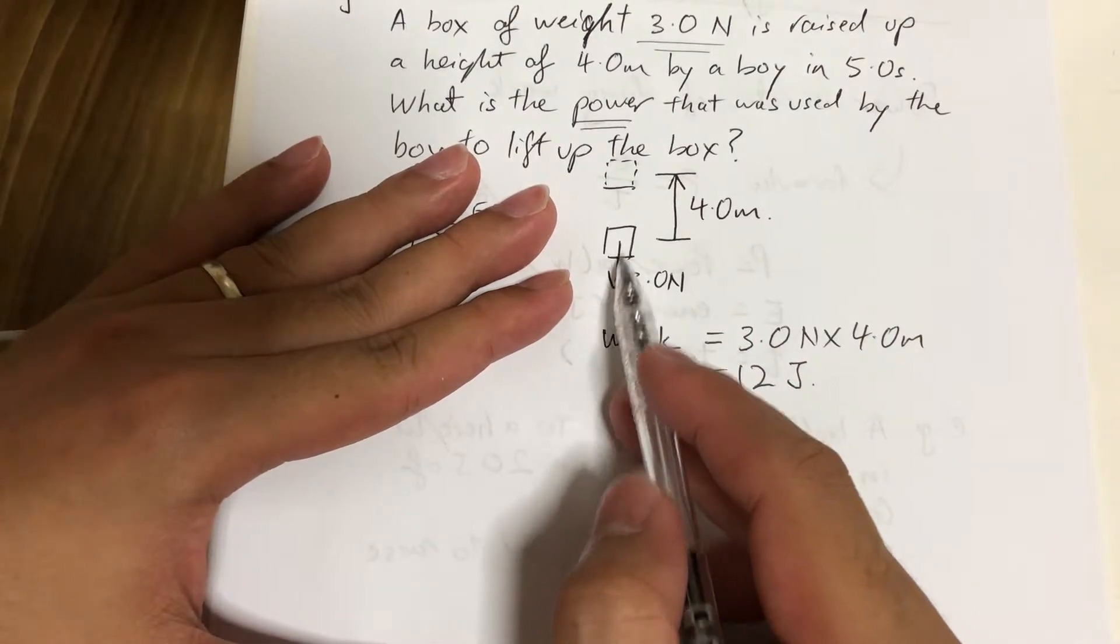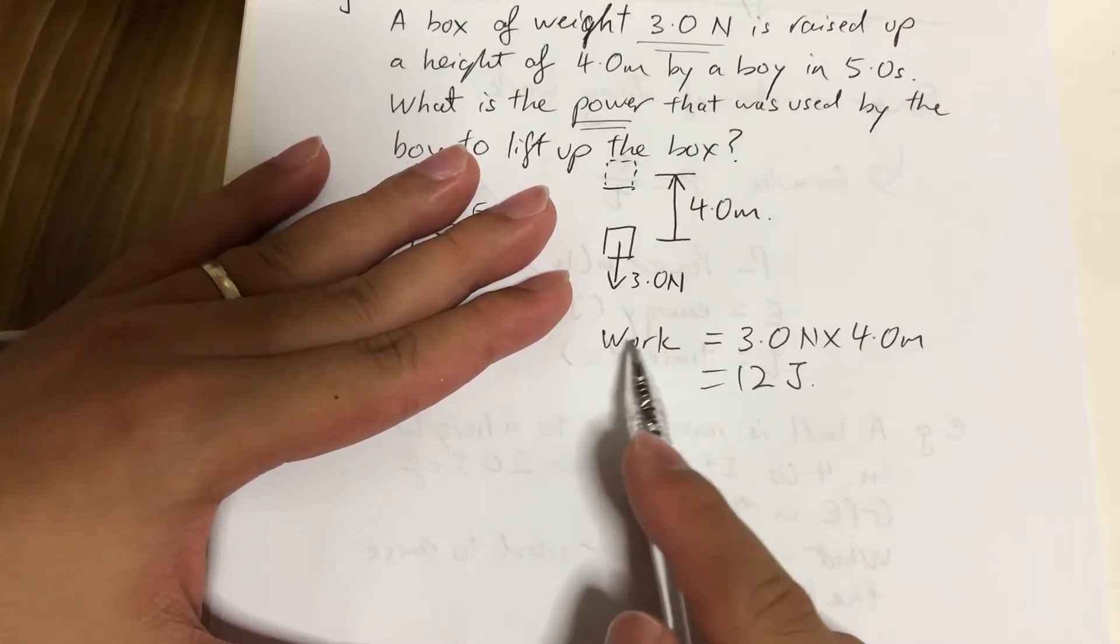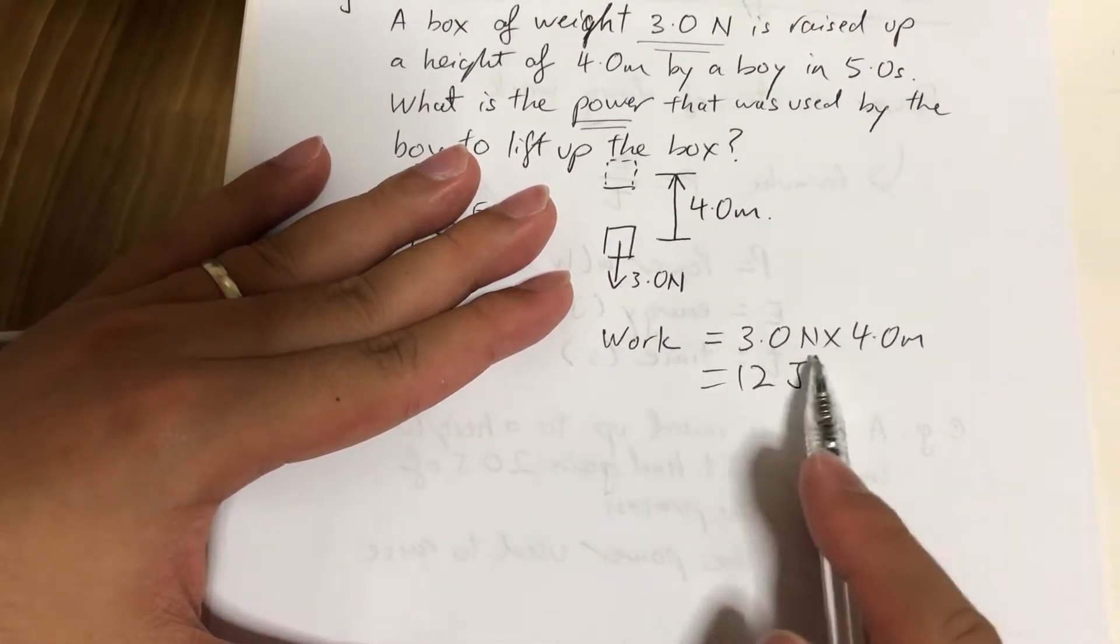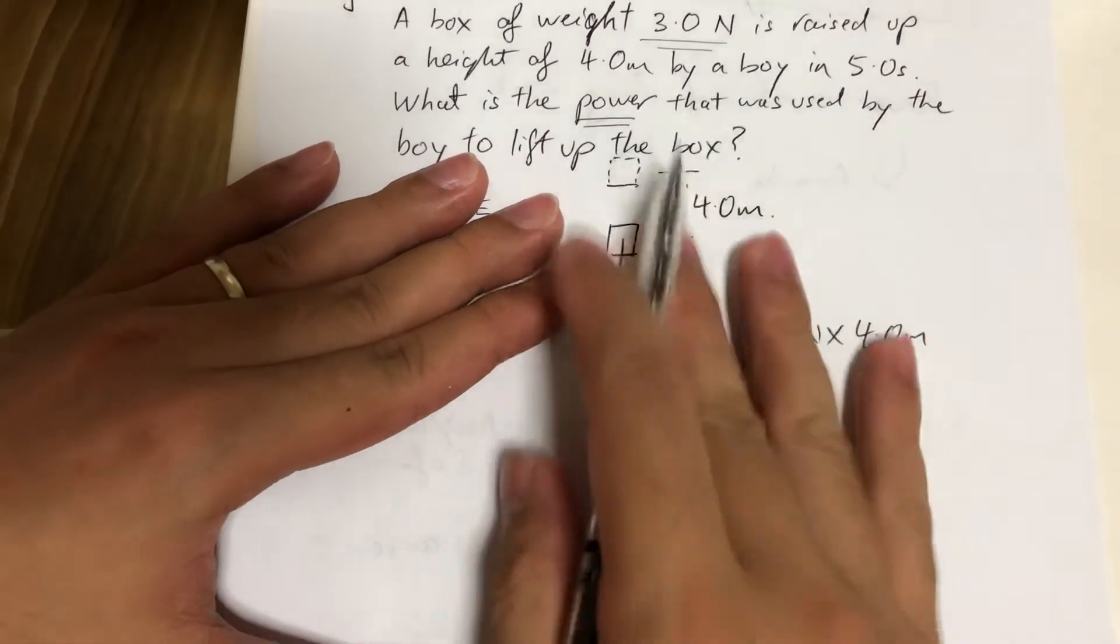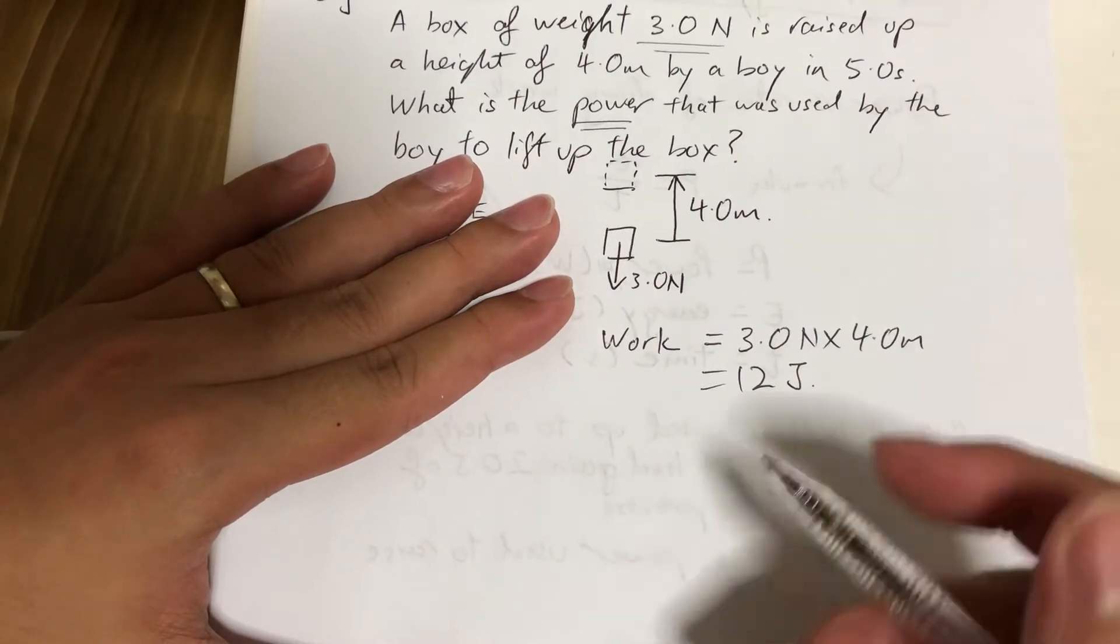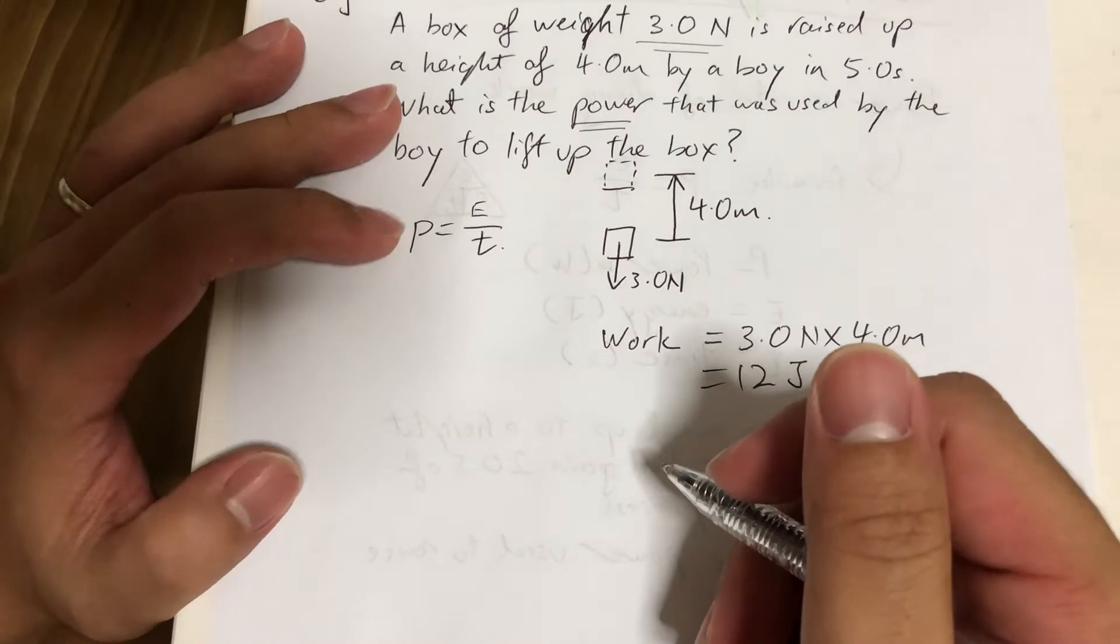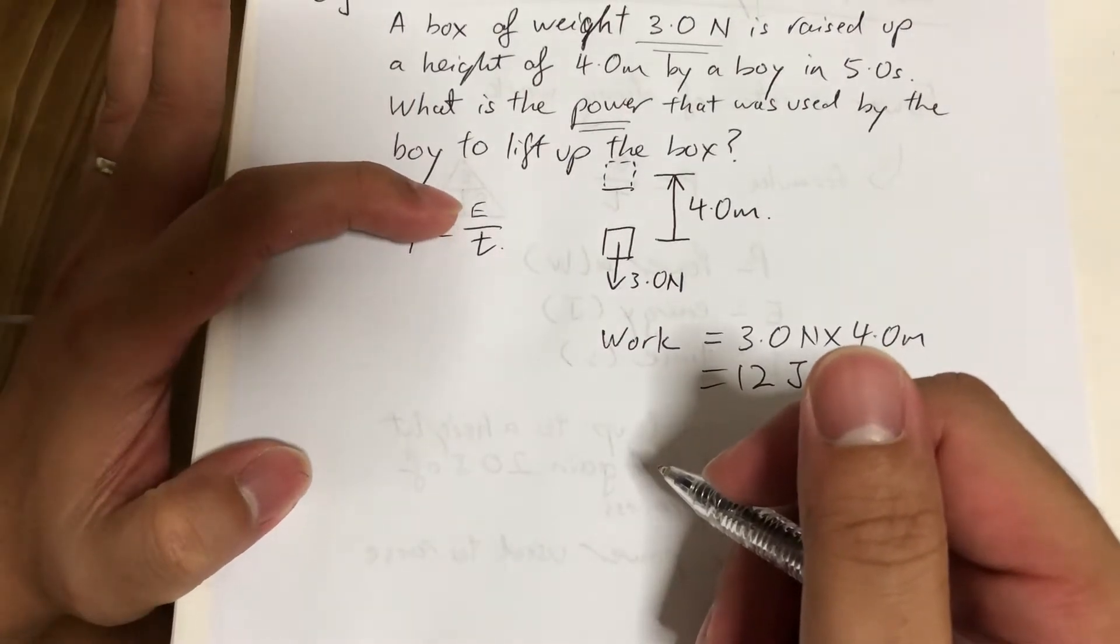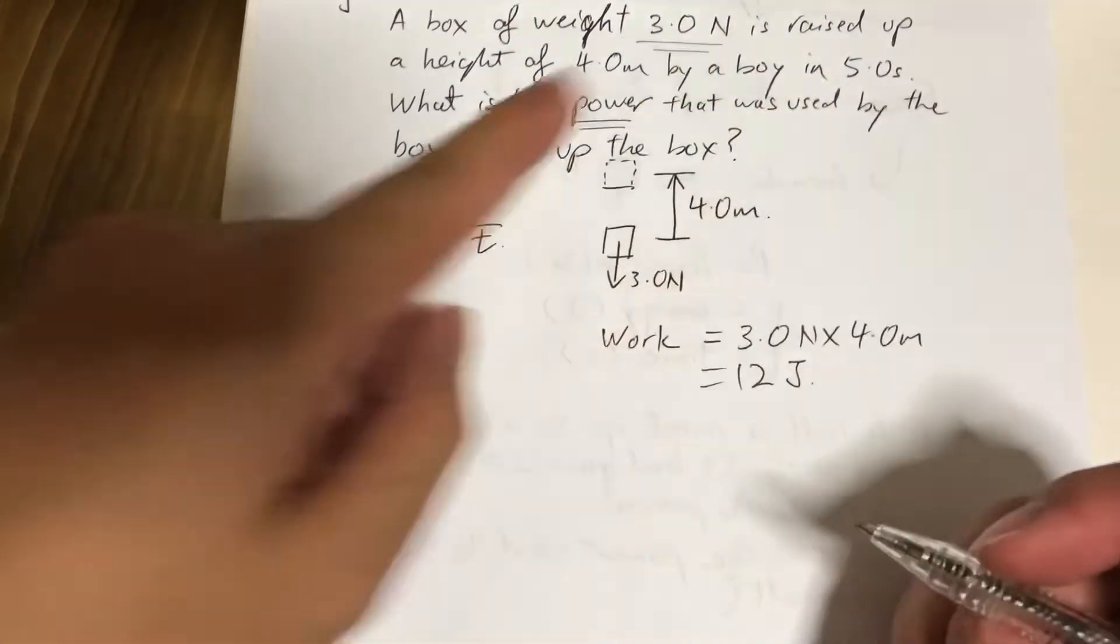So since they are parallel, I know that the work done formula can be used, which is force times distance. So 3 times 4 is 12. From this I know that 12 joules of energy is being spent, which means I have found my energy. And time is already given in the question, 5 seconds.